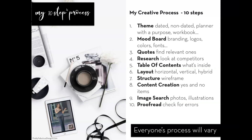Number nine is photos and illustrations — once everything is done, I know what photos will match the mood and feeling I'm trying to convey for each particular page. And number ten is proofreading, where I print everything out. Your process will obviously vary, but if you're just not sure what to do, this is my process.